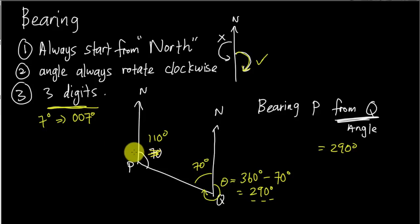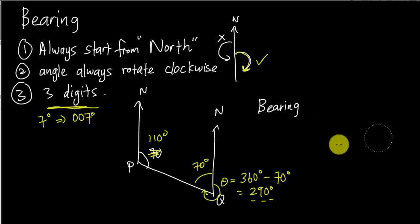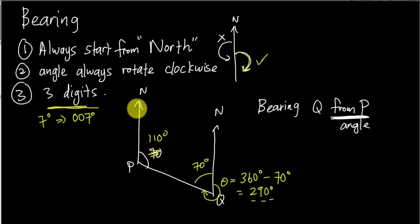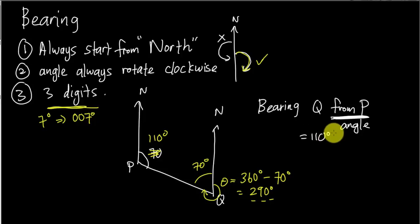Now if I change the question slightly and ask for the bearing of Q from P, the angle is now at point P. From the north of P, I rotate clockwise until I touch the line connecting P and Q. That gives 110 degrees directly — no further calculation needed. The bearing of Q from P is 110.